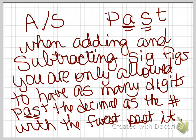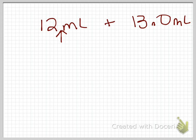Now what does that mean? Let's go back to our two. We had twelve and we had thirteen point zero. This one has no digits past. This one has one digit past. Which one has fewer places past the decimal?